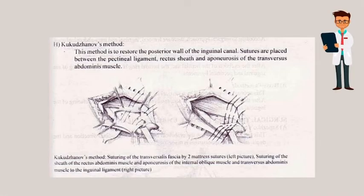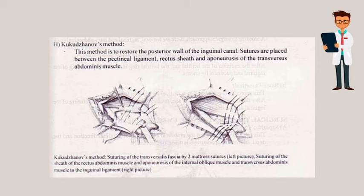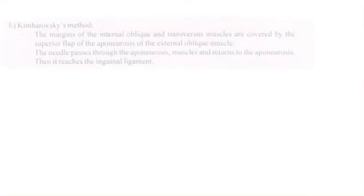Next, we have Cucuzanoff's method. This method restores the posterior wall of the inguinal canal. Sutures are placed between the pectineal ligament, rectus sheath, and upper aponeurosis of the transverse abdominis muscle. This involves suturing of the transversalis fascia by two mattress sutures, as shown in the left picture, and suturing of the sheath of the rectus abdominis muscle and upper aponeurosis of the internal oblique and transversus abdominis muscle to the inguinal ligament, as shown in the right picture.